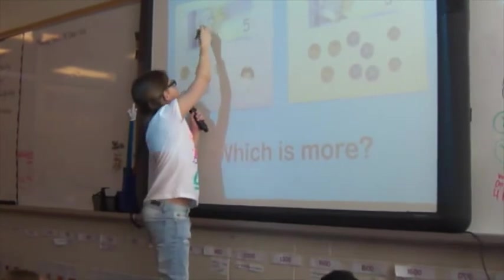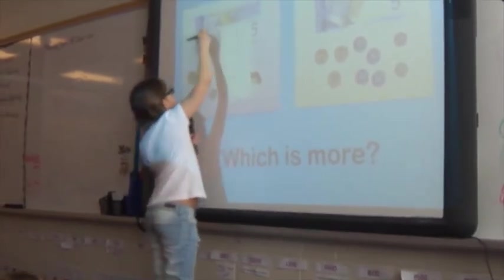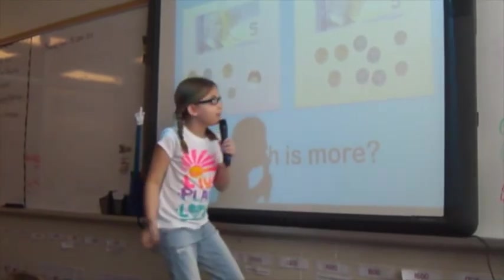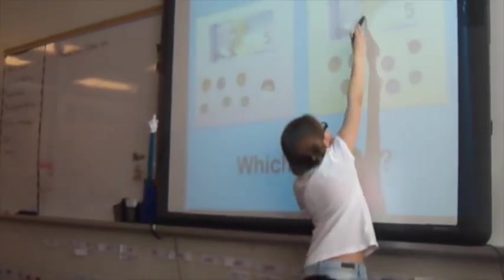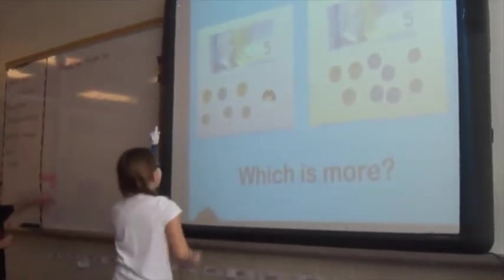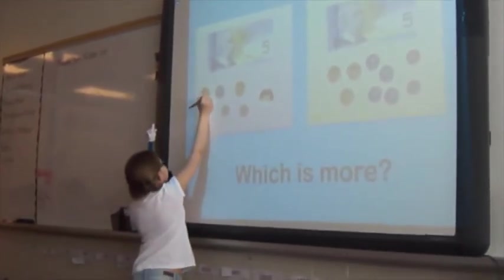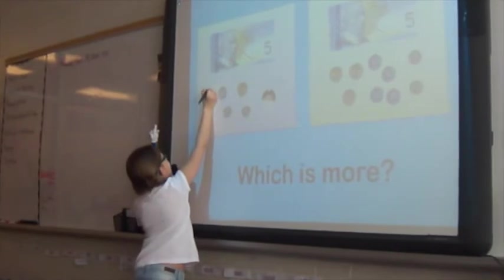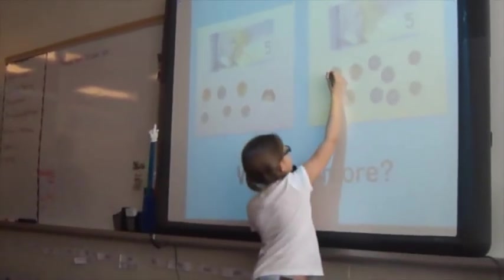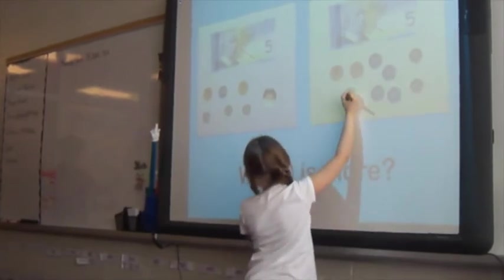Brain researchers have proven that our brains only grow and develop when we make mistakes and learn from them. A student's brain sparks first when they make a mistake, and again when they are given the opportunity to learn and reflect on that mistake. Teachers are setting up classroom environments that encourage thinking versus simply supplying the correct answer. Students are no longer feeling embarrassed or ashamed when they make a mistake, but rather see it as an opportunity to learn something new.